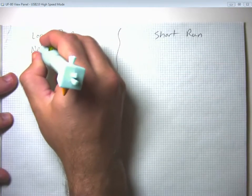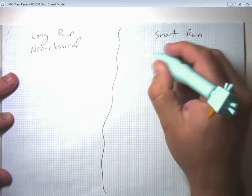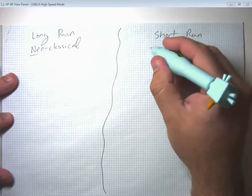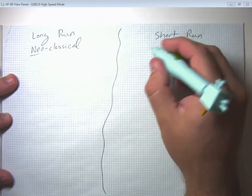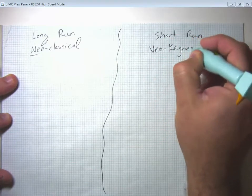So in the long run, we tend to rely on what's called neoclassical analysis, the new classical analysis. And in the short run, in response to some of the criticisms of the neoclassicals, the Keynesians have come up with a neo-Keynesian analysis.